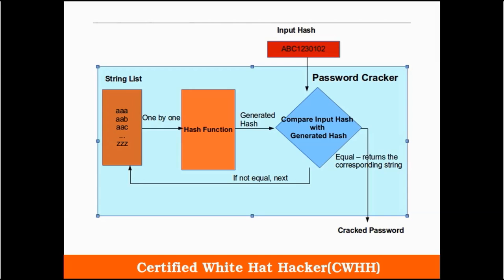This is the simple explanation of how a password cracker works. You have the input hash over here and you have the string list over here. Every single string from the list goes through the hash function one by one, and the generated hash is compared with the input hash. If it is not equal, then it goes to the next one in the string list. If it is equal, then it returns the corresponding string from the string list and the password is shown in plain text.